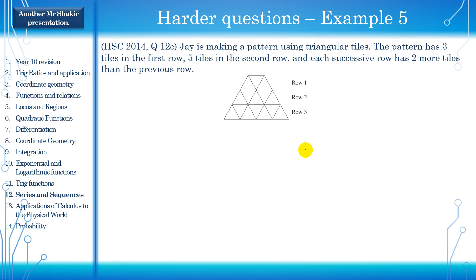Alright, this is a HSC question, 2014, question 12c. J is making a pattern using triangular tiles. The pattern has three tiles in the first row, five tiles in the second row, and each successive row has two more tiles than the previous row. And in the HSC exam, they actually included this graphic as well. So we can see three tiles, three tiles in the first row, five tiles in the second row, and so on. It's going to keep on increasing. So how many tiles will J use in row 20? That was the question. That was the first part of the question, I guess. And we're not going to do the whole HSC question because we haven't done series yet, I guess. So we can't do the whole question. We're just going to do the first part, this part that you can see. How many tiles will J use in row 20?